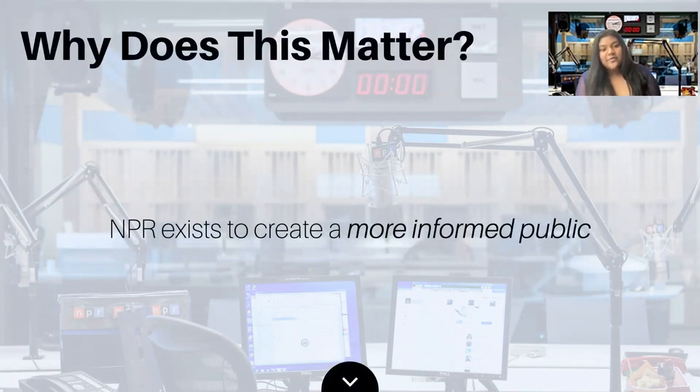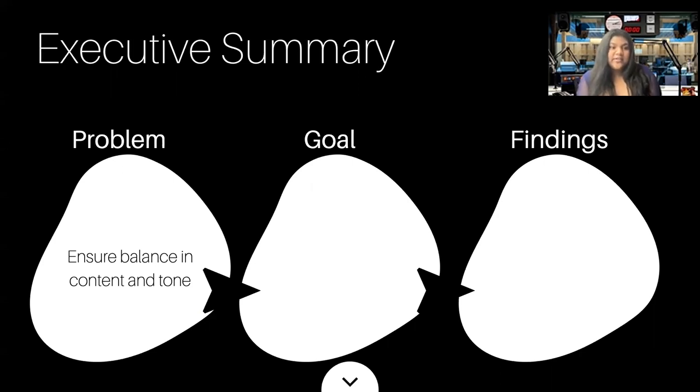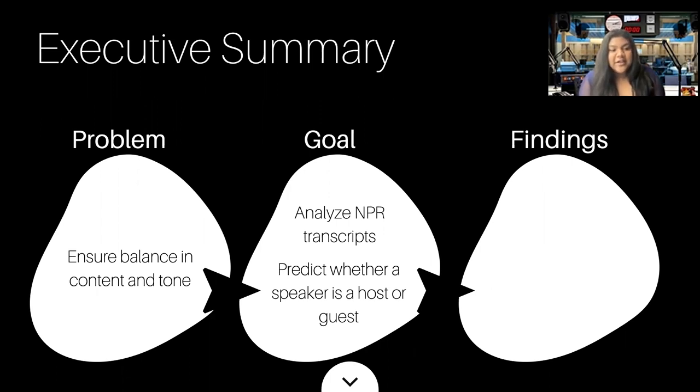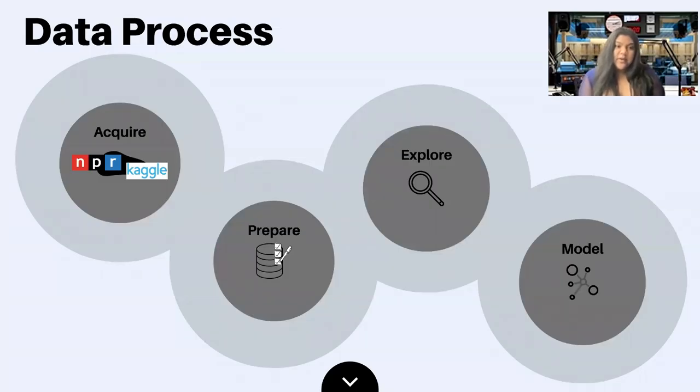At the start of the project, our initial question was does the media reflect the mood in the country? We answer this question and explore further ways to analyze trends in NPR's reporting. NPR exists to create a more informed public, so the public needs to be able to keep track of what they are listening to. The problem statement we wanted to look into was to ensure balance in content and tone. So our goals consisted of analyzing the NPR transcripts to understand sentiment and evaluating speech patterns and to build a classification model to predict whether speech belongs to a host or a guest. Our findings were NPR's programs have a neutral sentiment and that we have a 76 percent accuracy rating when predicting whether a speaker is a host or a guest.